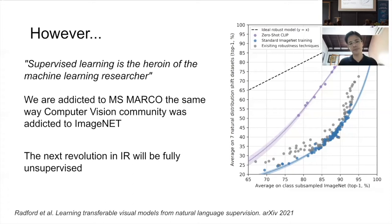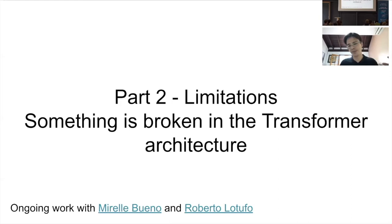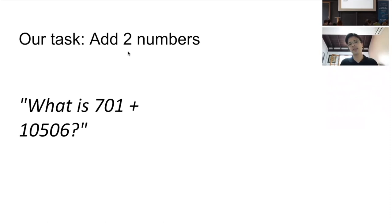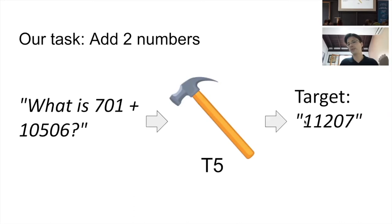That was part one — a very positive mood. Now in part two I'll expose at least one limitation of how transformer architectures work. The task is quite simple: we just ask the model to add two numbers. We give it to our hammer T5 and train it to produce the answer digit by digit. We have an infinite amount of training data, but we're looking at the low training data regime — how quickly these models can learn the task.